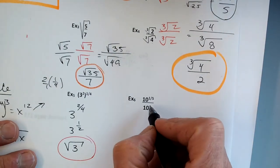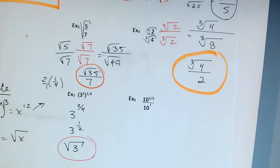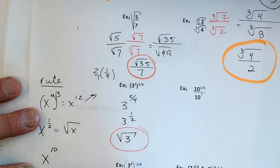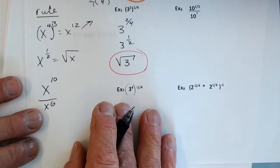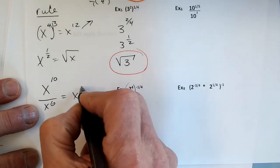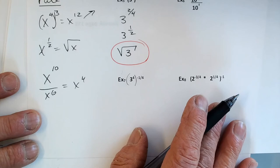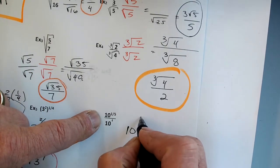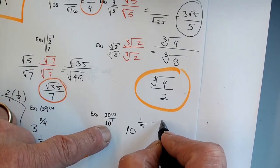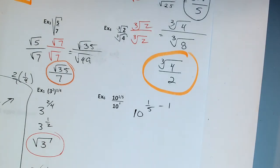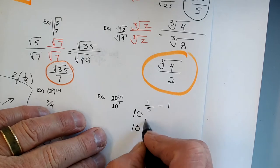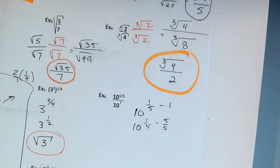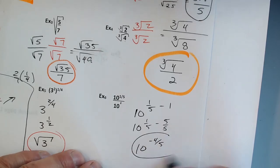Number 6. There's an invisible 1 here — there's an invisible one right there. Let's go back to freshman algebra. If you had x to the tenth over x to the sixth, you'd subtract exponents and get x to the fourth. So I'm going to do the same thing here. I'm going to subtract exponents: 10 to the 1 fifth minus 1, which is the same as 1 fifth minus 5 fifths — getting a common denominator. I get 10 to the negative 4 fifths.